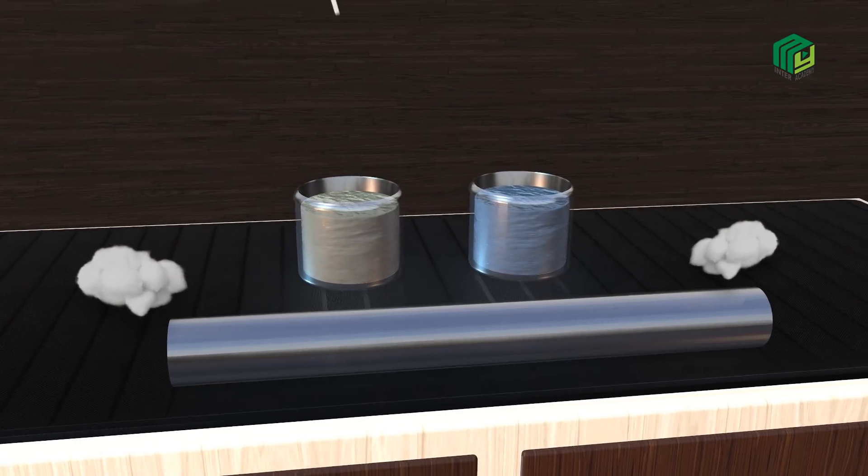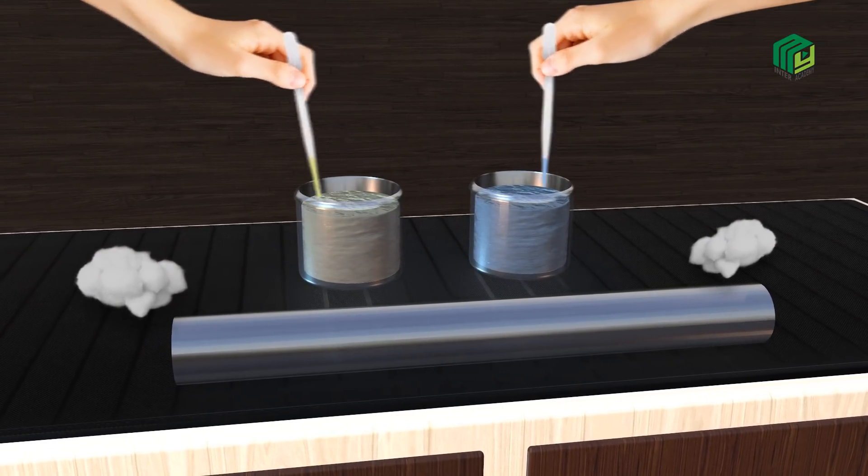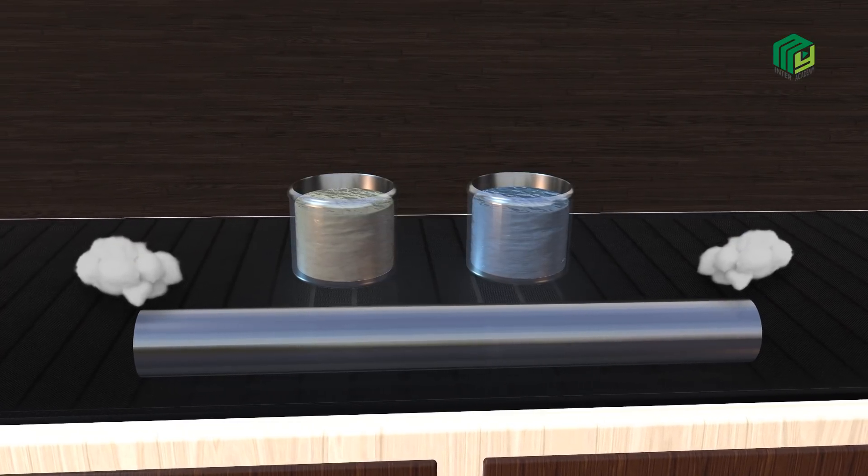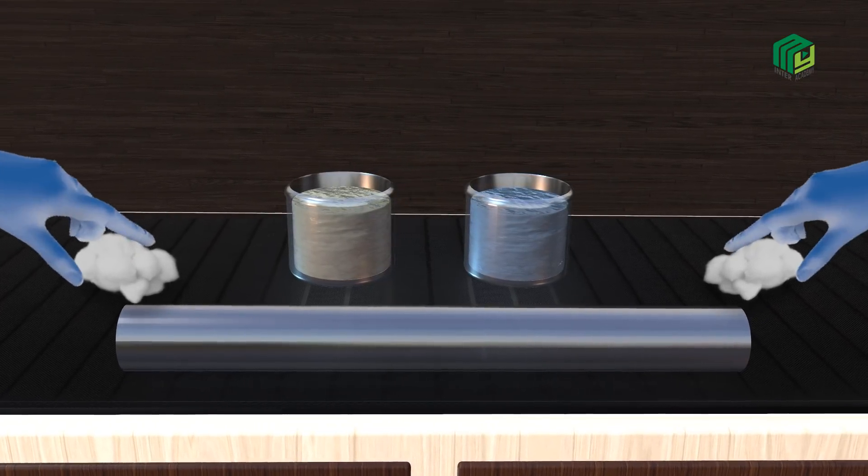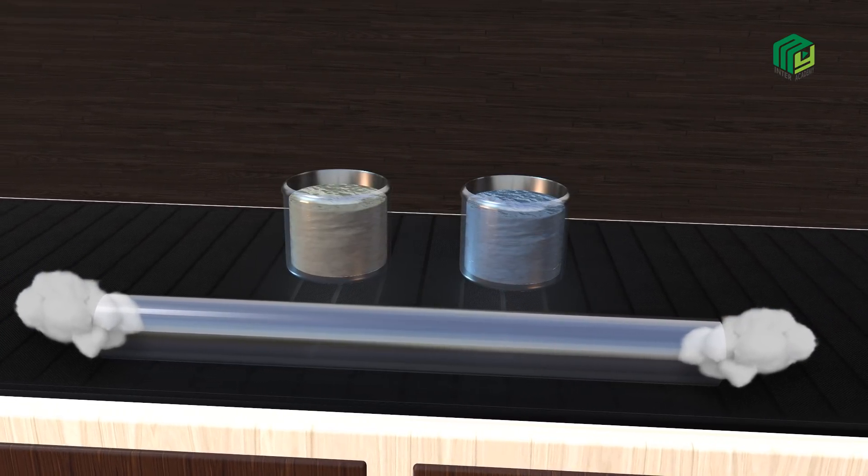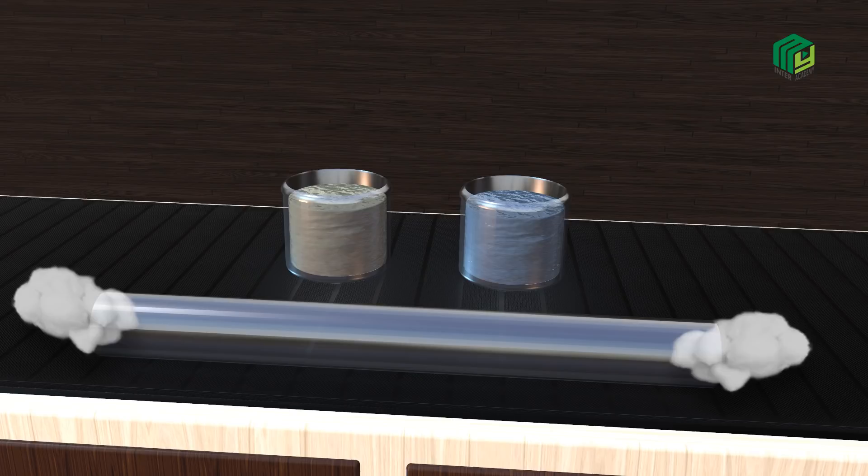A few drops of ammonia and hydrochloric acid are dropped on separate cotton buds. These cotton buds are then placed at the ends of the test tube. After some time, gaseous ammonia and hydrogen chloride will diffuse, and when these molecules react...